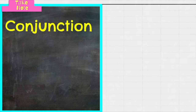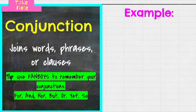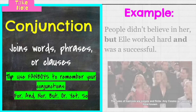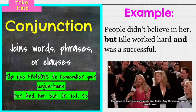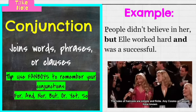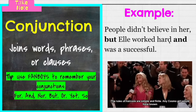And finally, conjunctions. Conjunctions join words, phrases, or clauses. For our basic conjunctions, I like to think of FANBOYS to help you remember — it's an acronym: For, And, Nor, But, Or, Yet, So. Those are the FANBOYS. Example: People didn't believe in her, but Elle worked hard and was successful. But and and are the conjunctions — they're part of our FANBOYS. A conjunction connects the first clause, which could be a sentence by itself, to the second clause. It's joining things together.